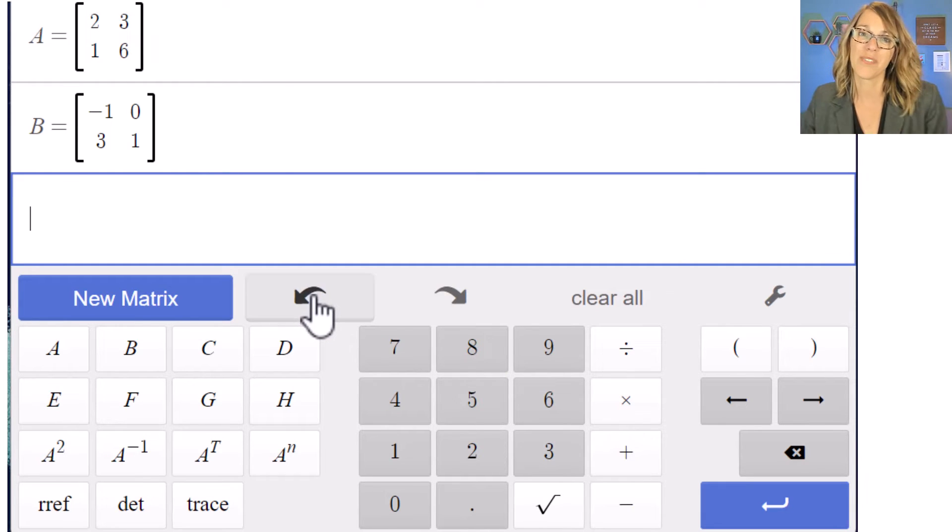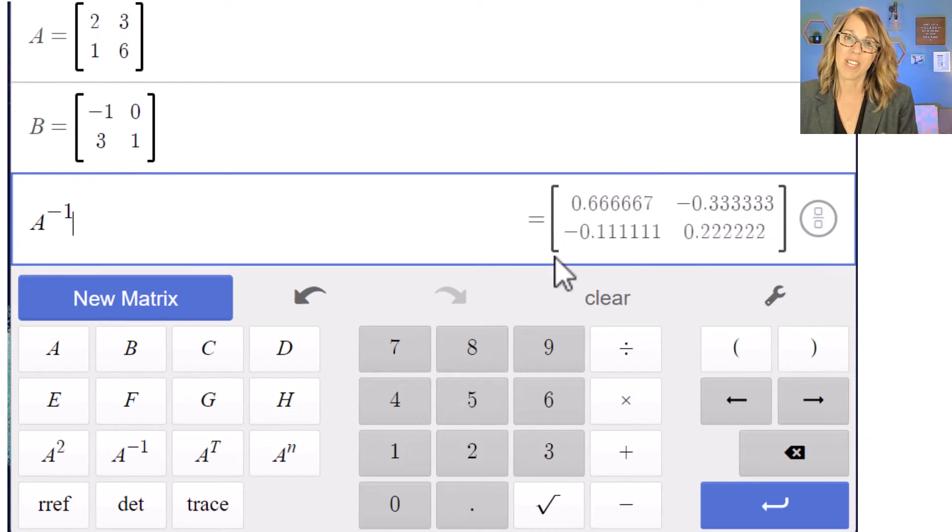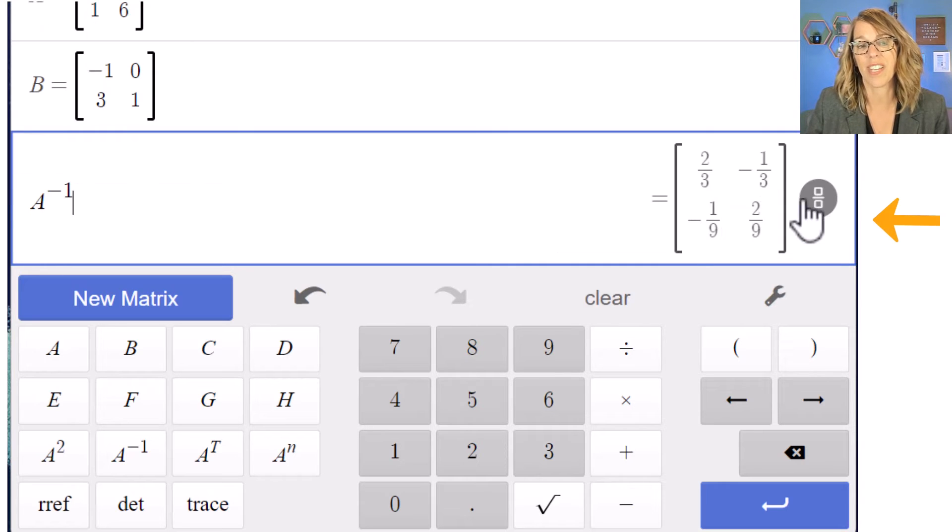So many wonderful tools here, including the inverse. Now to get to the inverse, I want to start with my matrix letter. So I'm going to do the inverse of matrix A and I can do A inverse and it gives me those decimal entries, but it also gives me the convert to fraction option. Let's go ahead and convert that to a fraction to get a nicer version of this inverse.